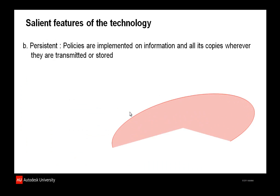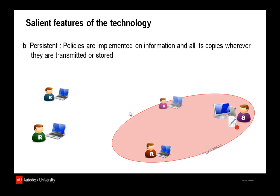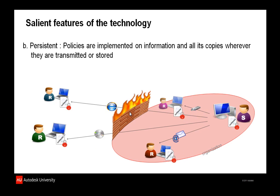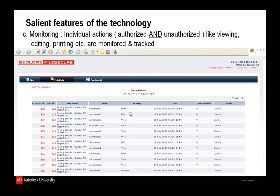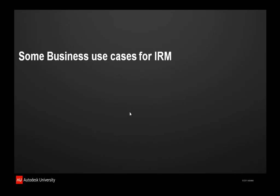Second, the policies are persistent — once a document is protected, the protection travels with the document whether it is sent via pen drive, internet, email, or CD. Third is the monitoring system, where all activities performed by the receiver — authorized and unauthorized — are logged and tracked, including viewing, editing, and printing, along with the date, time, computer name, and MAC address.